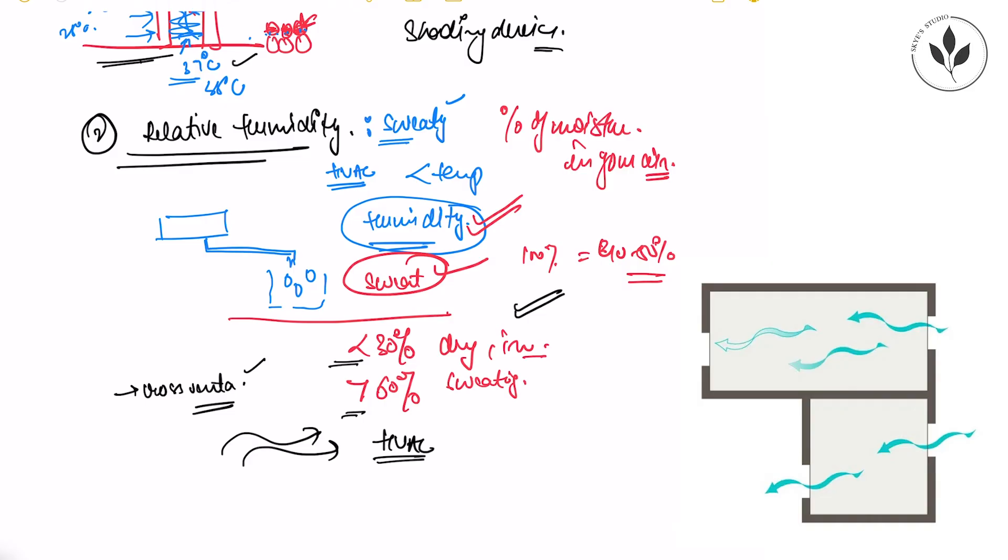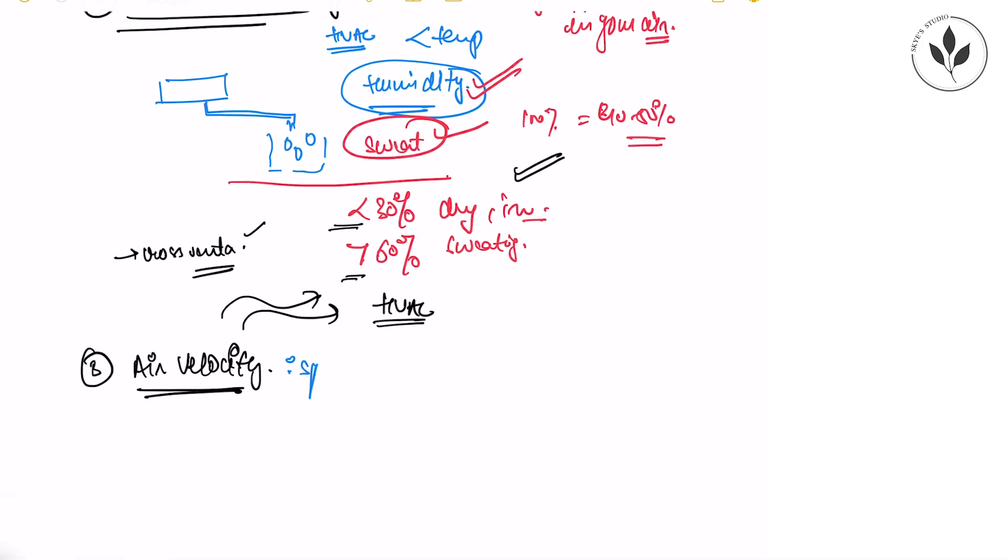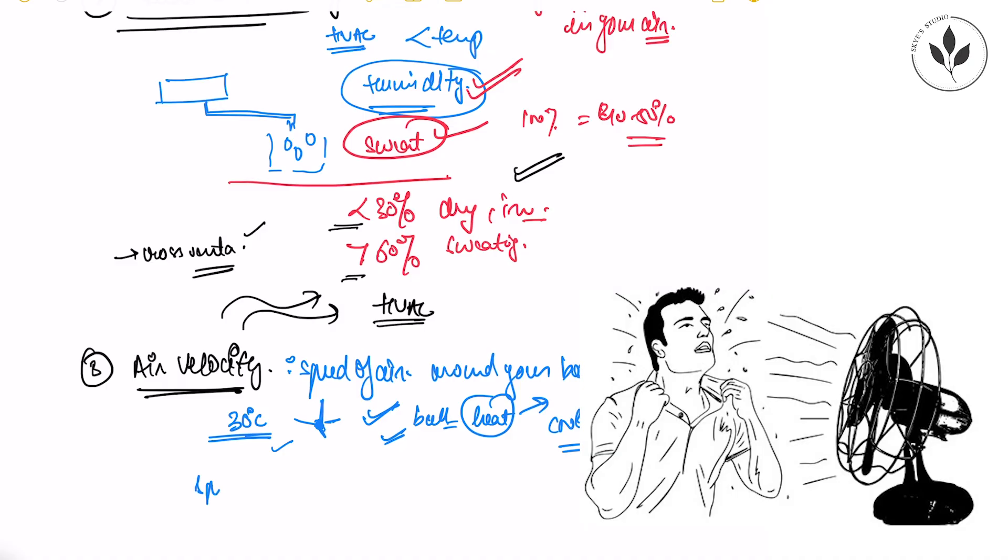So yeah relative humidity affects the thermal comfort of a human being because temperature might be low but sweating will always be uncomfortable. For example in gyms. Now next is air velocity. How is air velocity important? Air velocity is basically the speed of air around your body. Now suppose the temperature in your area is 30 degrees Celsius and in your room you don't have your fans switched on. Now if the fan is not switched on you will feel fine but as soon as the fan is switched on you will feel better. Because when the air starts moving it takes the heat from your body and releases the heat from your body. That helps in cooling you down and you feel comfortable when the fan is switched on.